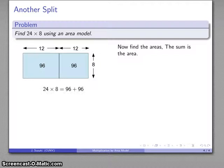And again, the sum is the area. 96 plus 96, 192.